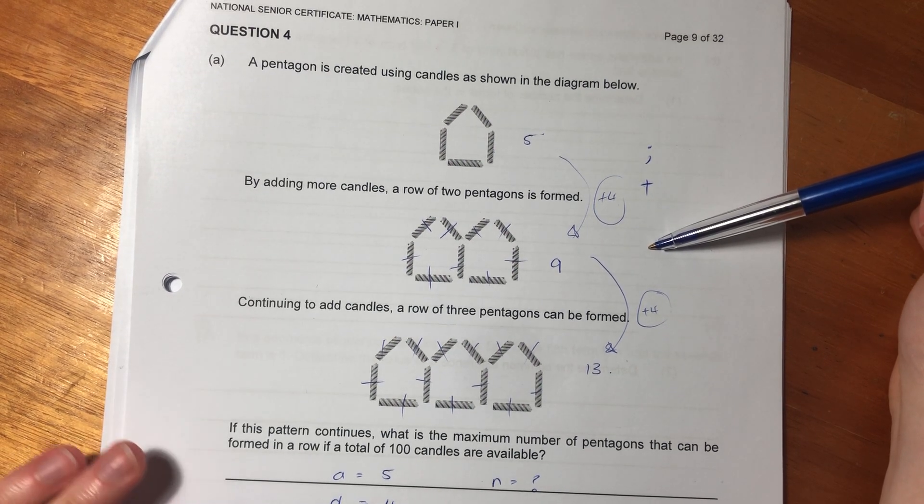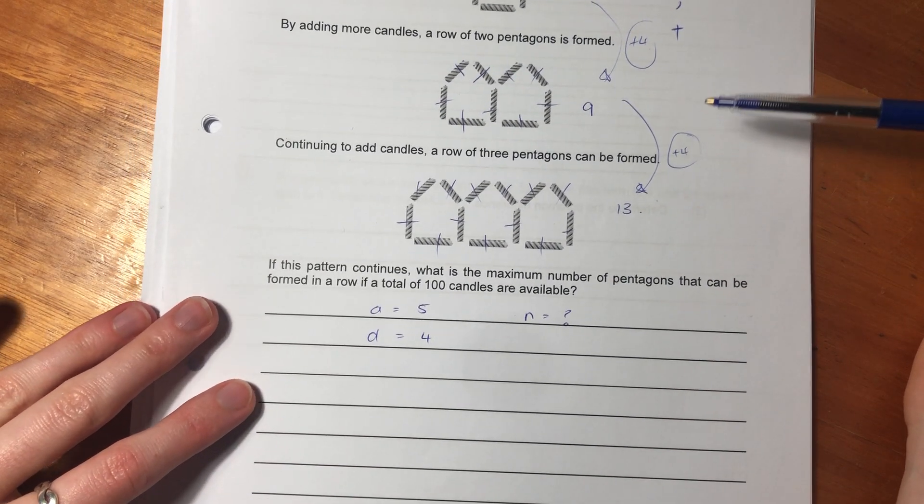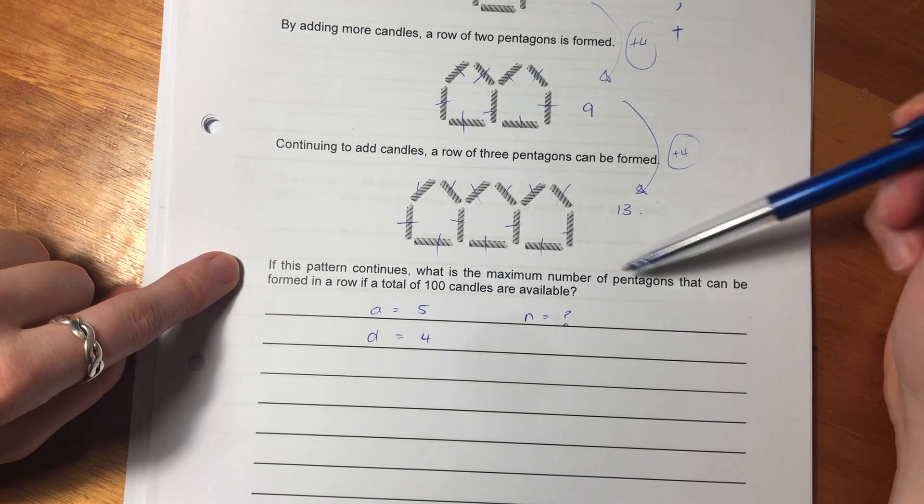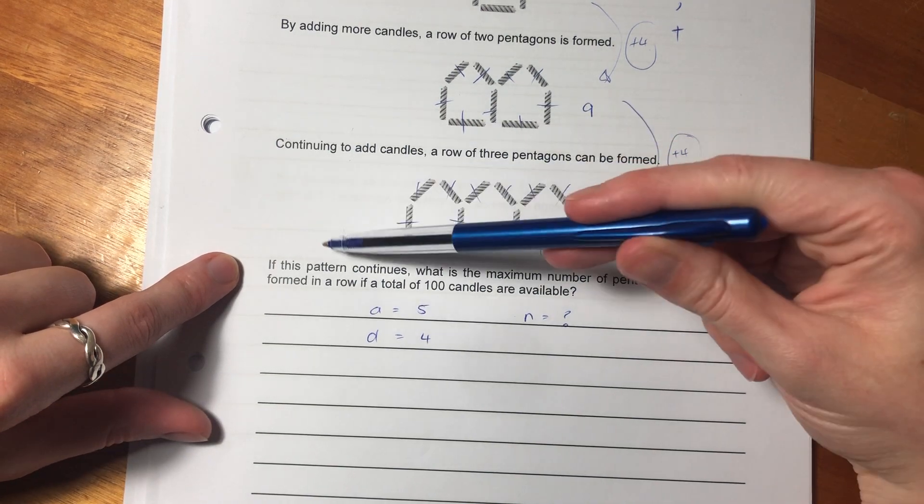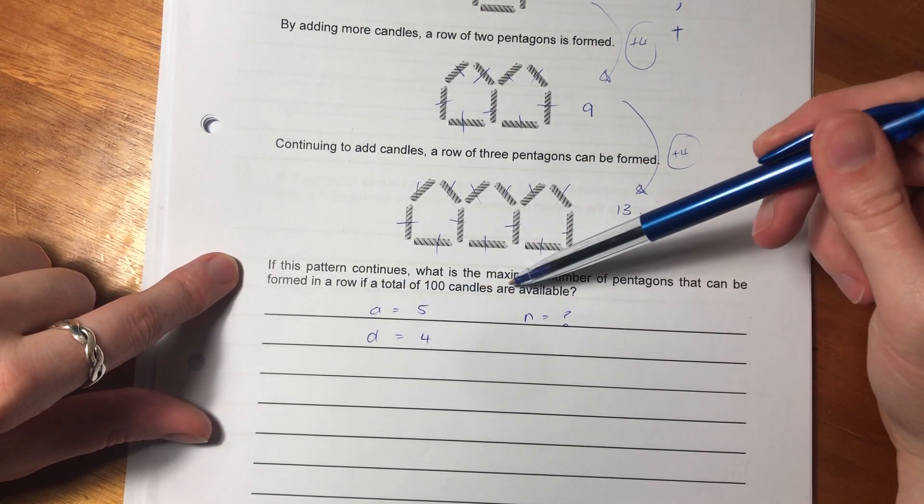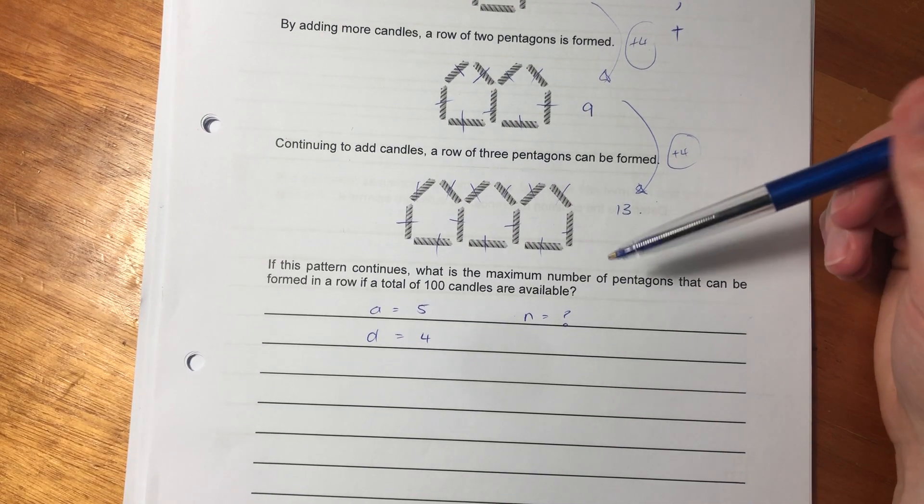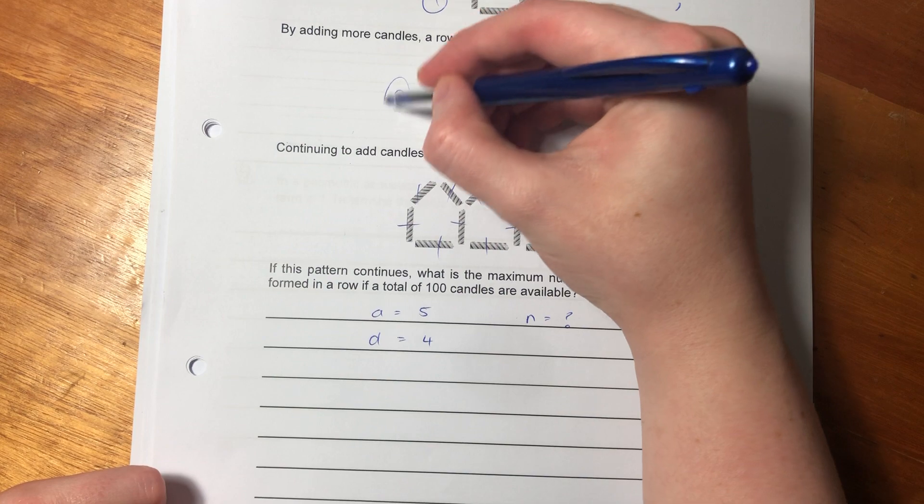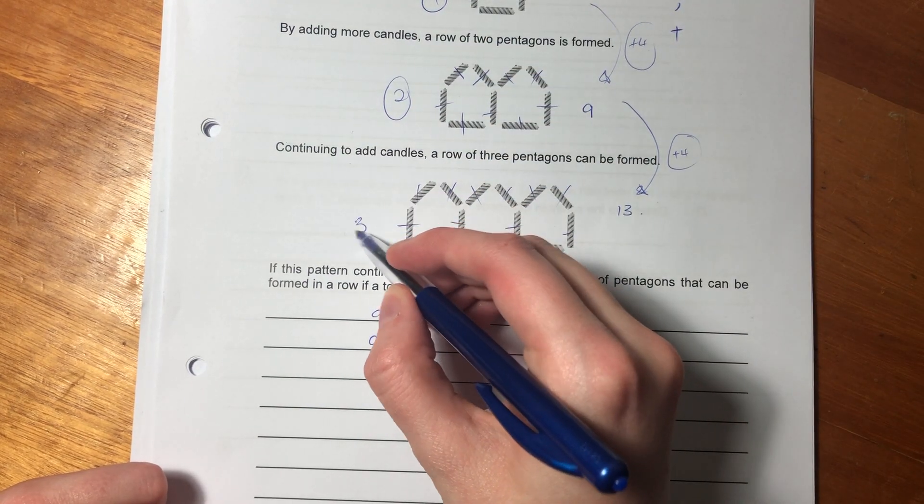So let's just jump into the question and see what they want from us. It says, if this pattern continues, what is the maximum number of pentagons that can be formed in a row if a total of 100 candles are available? So they're asking us about the term. So this, remember, is term one. This is term two. And this is term three.